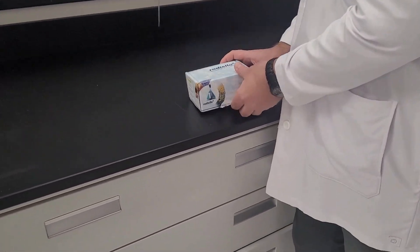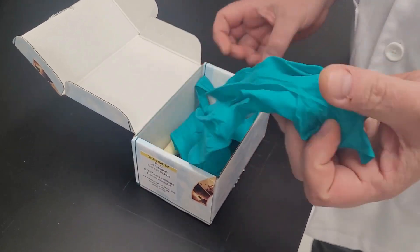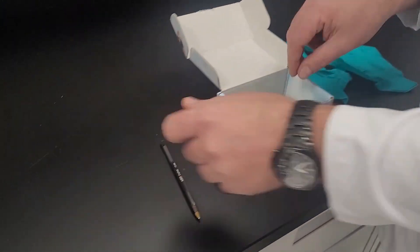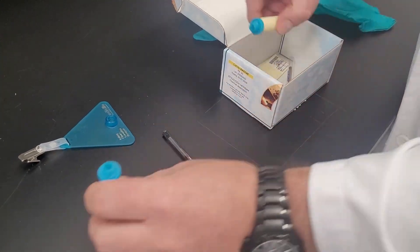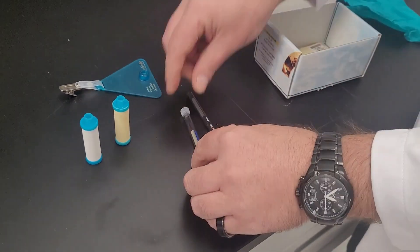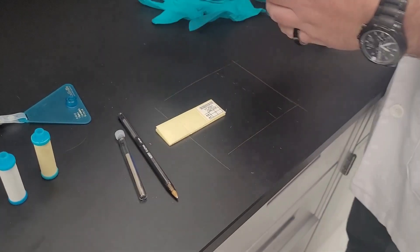You should have received this little box of Radiello samplers and inside of it will have everything you need to collect a VOC sample. Gloves, a pen, a stand with a gator clip, one of these two diffusive bodies, the sampling medium, and labels to write down your start and stop times.